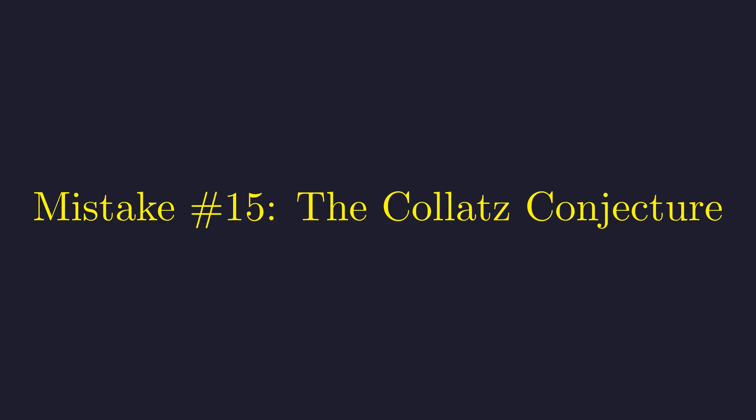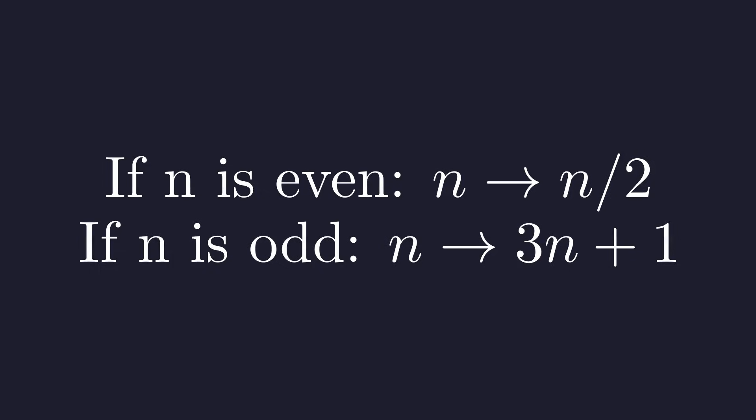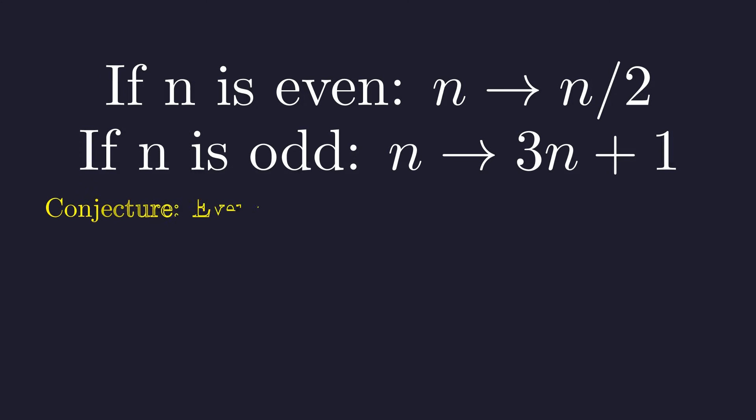We end with one of the most famously simple to state yet impossible to prove problems in all of mathematics. Take any positive integer. If it's even, divide by two. If it's odd, multiply by three and add one. Repeat this process. The Collatz conjecture is the claim that no matter what number you start with, the sequence will eventually reach one.